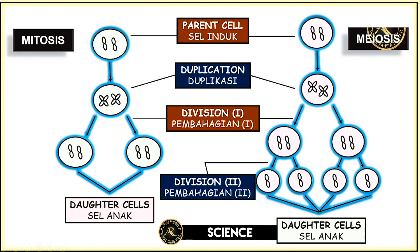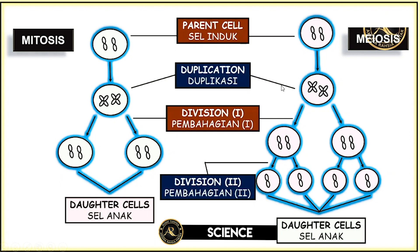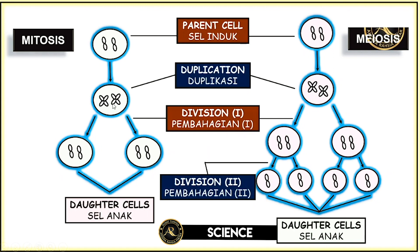So if you see that, you can understand that there is a halving division. In meiosis, duplication occurs once but division happens twice, producing cells with only one chromosome each. Division happens two times for meiosis but only once for mitosis.